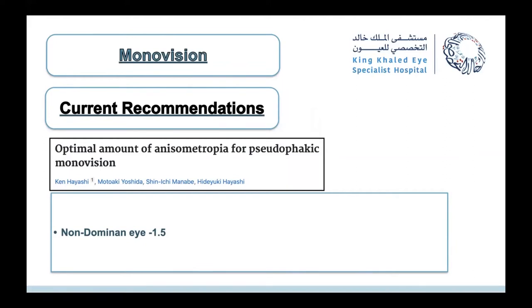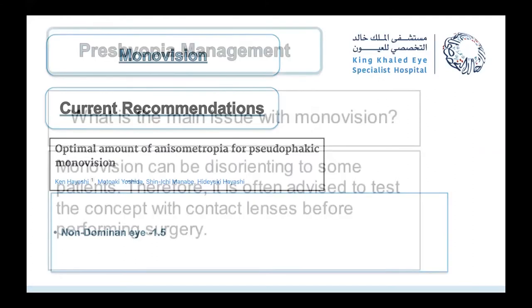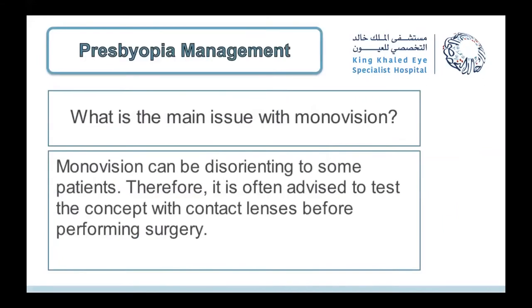The optimal amount of anisometropia for monovision should be minus 1.5 to 2 diopters, or minus 1.4 — not more or less. Going less risks losing near vision and gives more intermediate vision — what we call micro-monovision. Since monovision can be disorienting, it's advised to test the concept with contact lenses before surgery. A thorough discussion between the ophthalmologist, optician, and patient is essential.